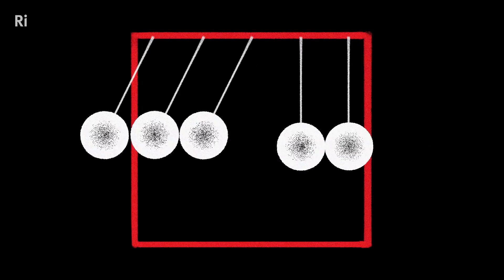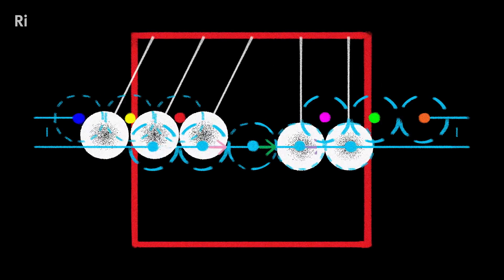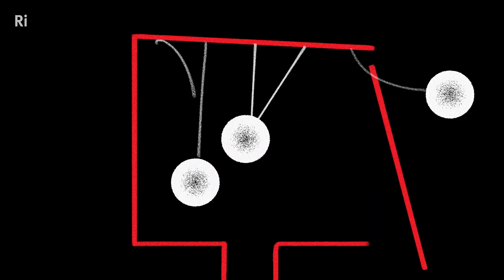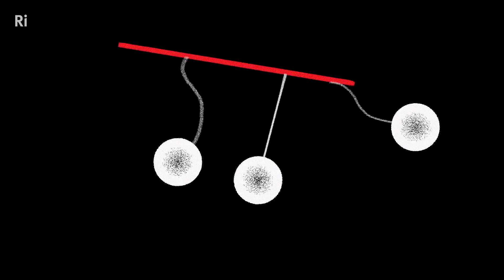And this is the beauty of symmetry. It gives definition to the world by revealing nature's parameters. If nature wasn't governed by symmetry we'd be living in a world of chaos where nothing is predictable or repeatable.